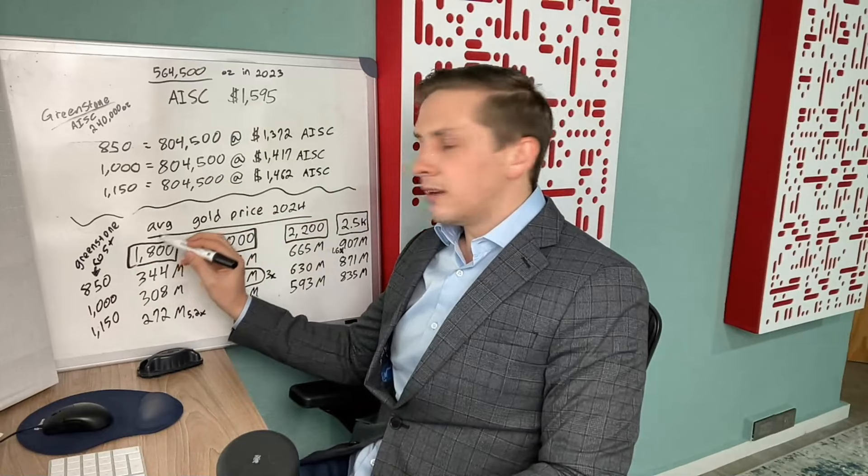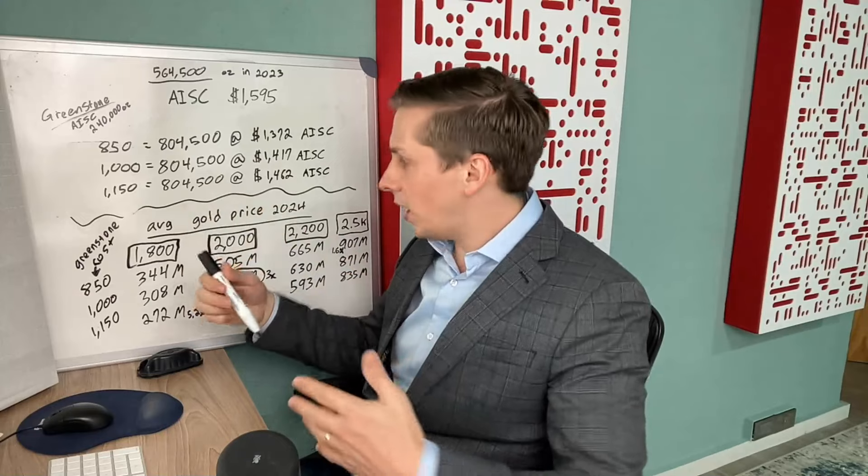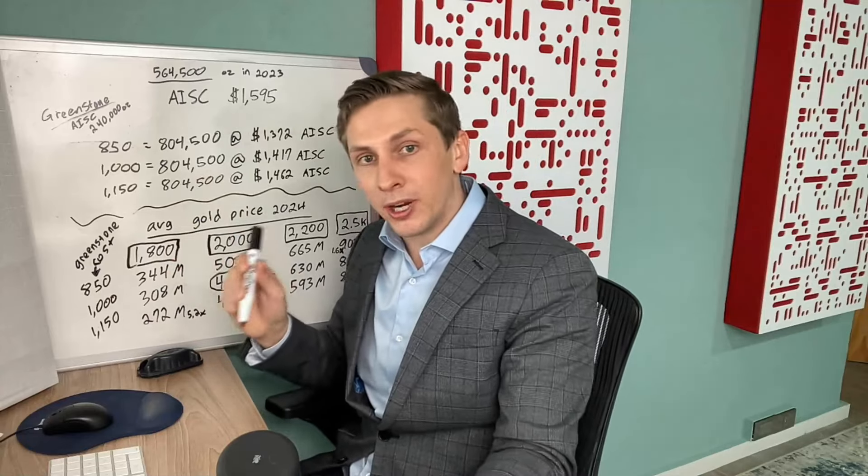Let's say the average gold price is $1,800, and that's company-wide, they're going to be selling their gold for $1,800 an ounce. So that would have to go down quite a bit from where the gold price is at today.